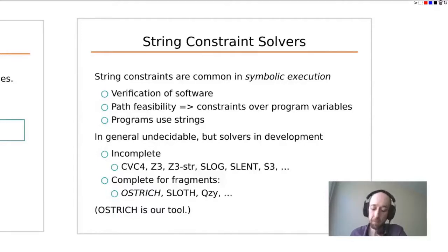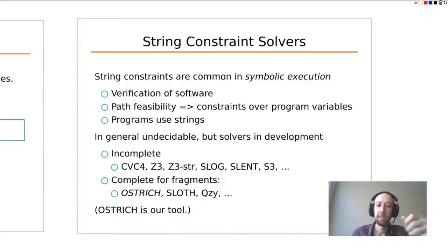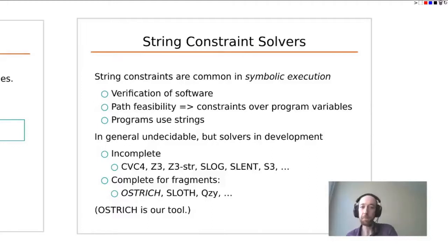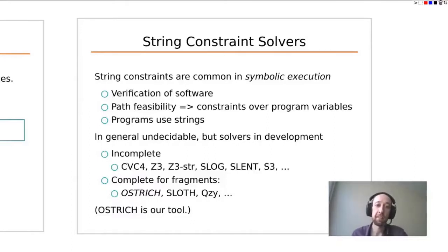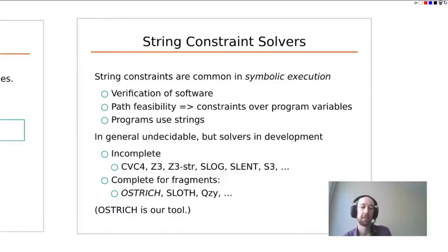String constraints are a popular research area because, much like Presburger, they have many applications — such as program analysis and verification using symbolic execution. The symbolic execution engine enumerates all paths through a program, and along each path collects a series of constraints from if-statements and variable assignments. It then asks whether that path is feasible — if it's satisfiable and it's an error path, we've found a bug. Since programs use string variables, some constraints will contain strings, which is why we care about string constraint solving.